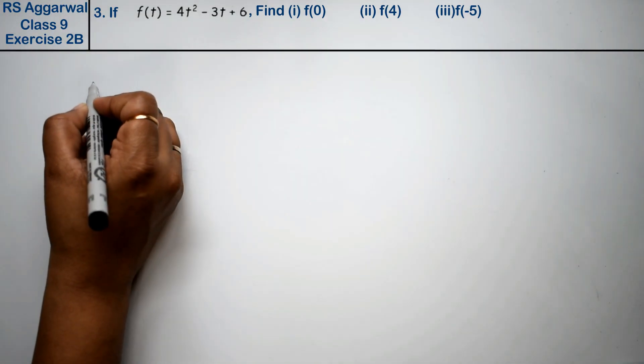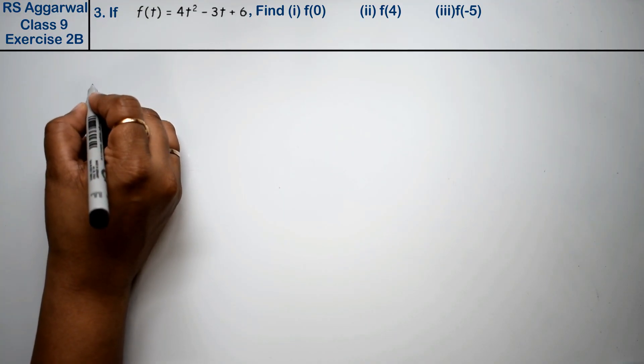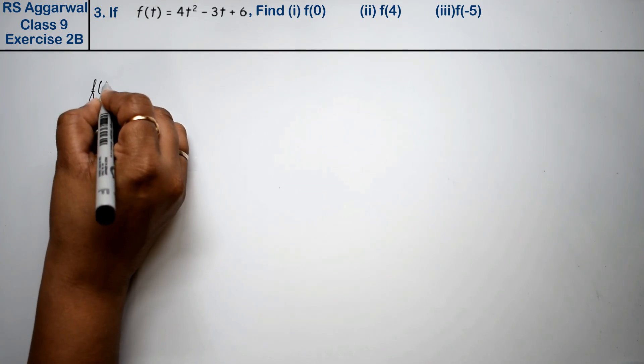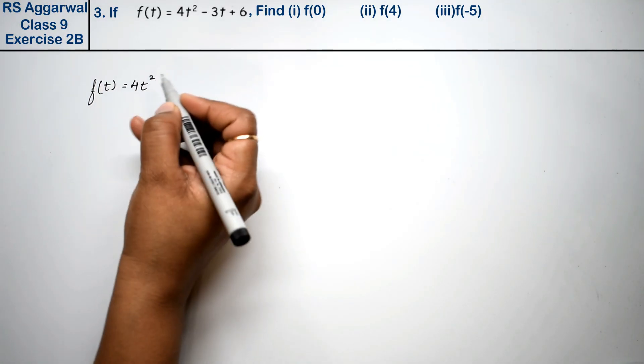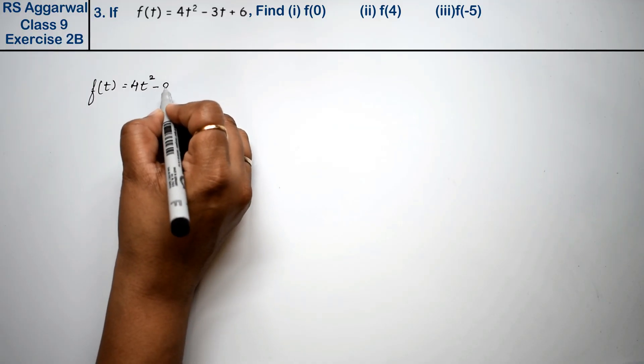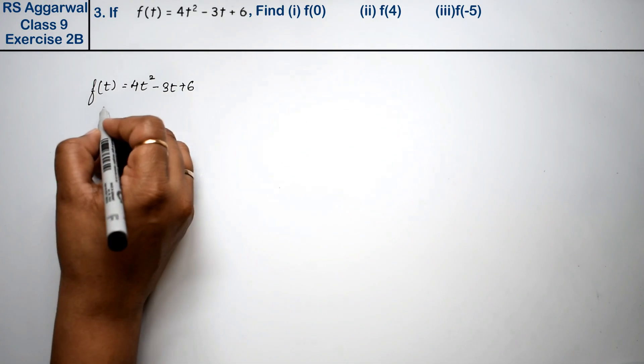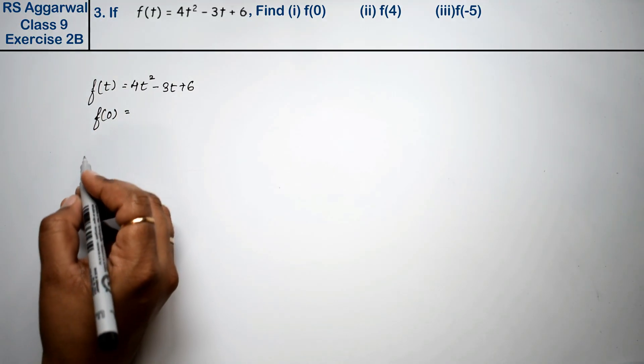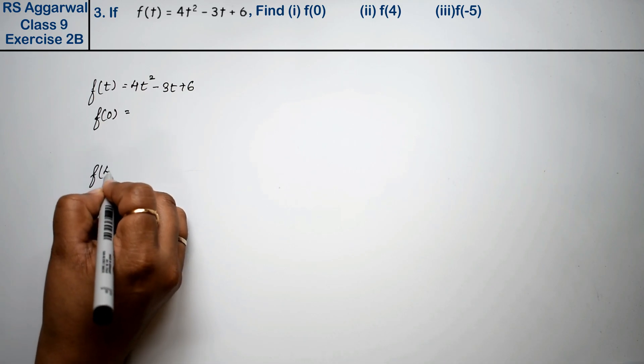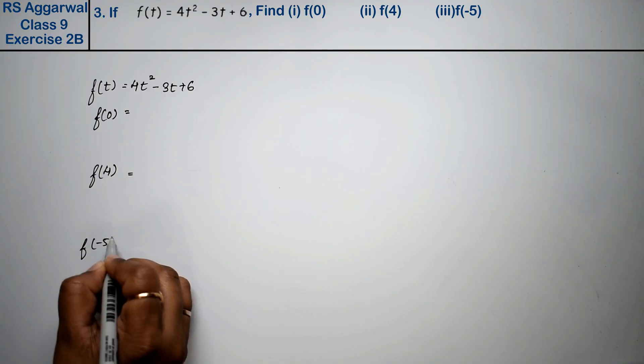Let's do question number 3 of Exercise 2B on polynomials. Question 3: If f(t) = 4t² - 3t + 6, find (i) f(0), (ii) f(4), and (iii) f(-5). We have three values to find.